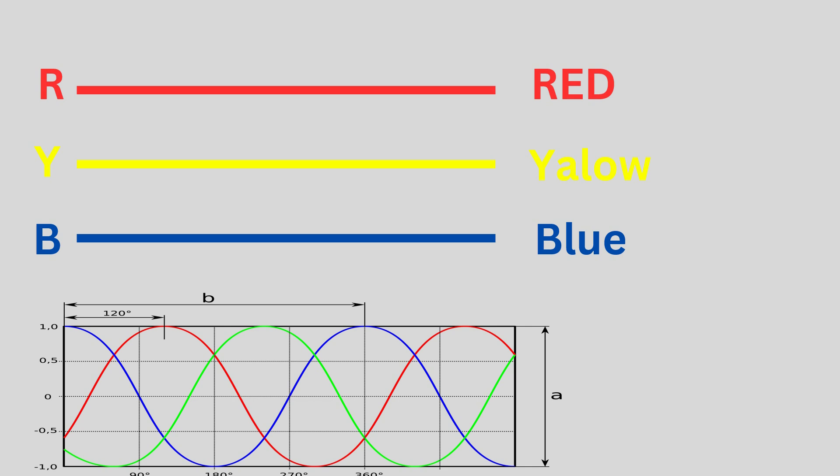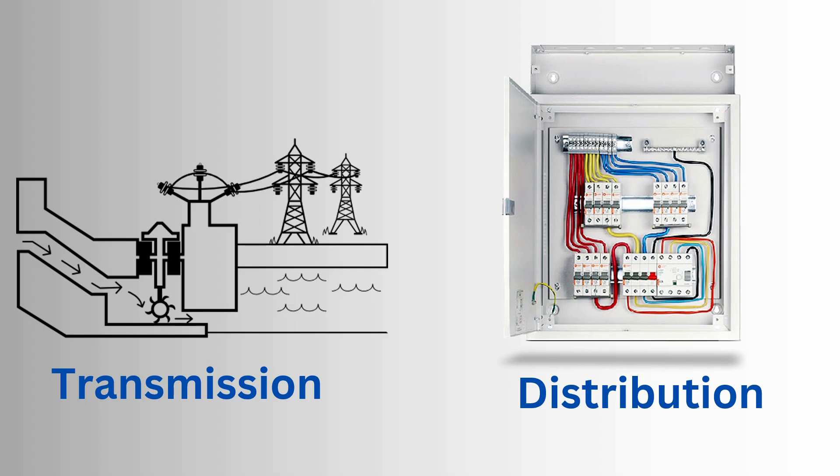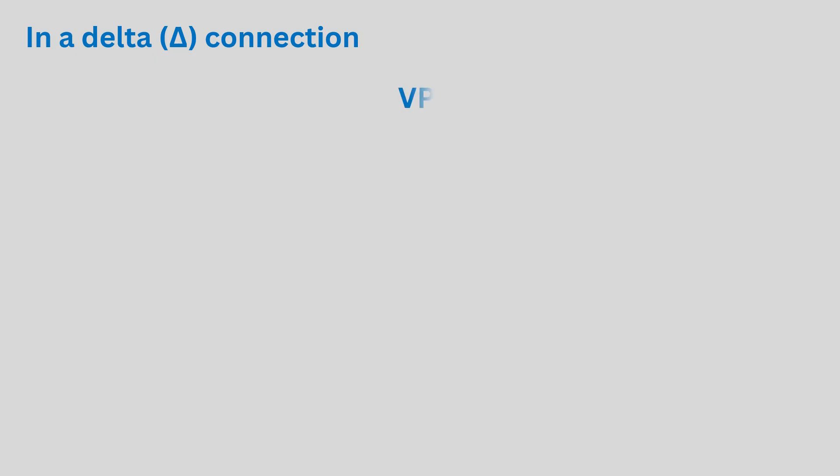Line voltage is commonly used in three-phase transmission and distribution systems. In delta connection, VP is equal to VL. For example, if the line voltage in a delta-connected system is 400 volts, then VP equals VL equals 400 volts.